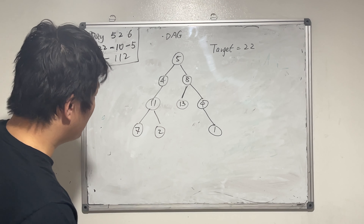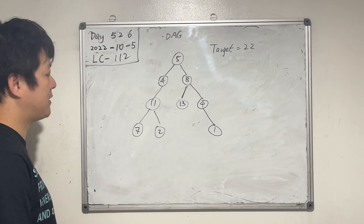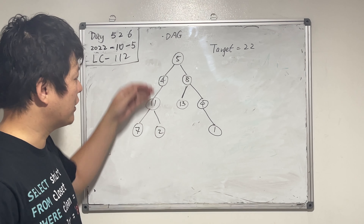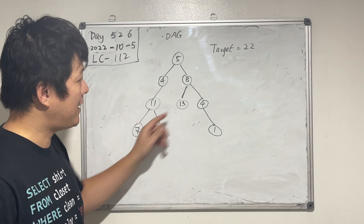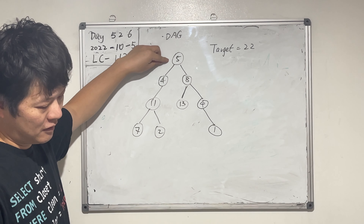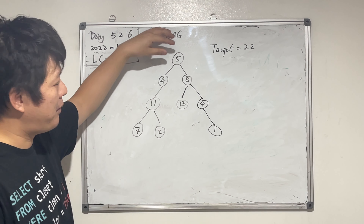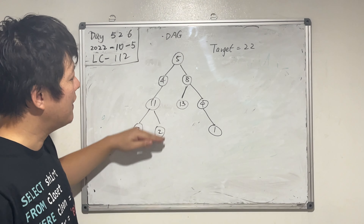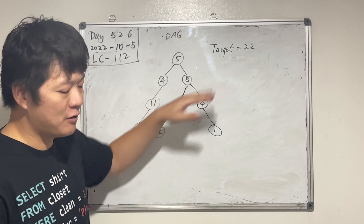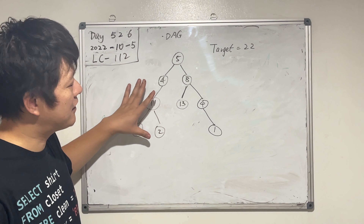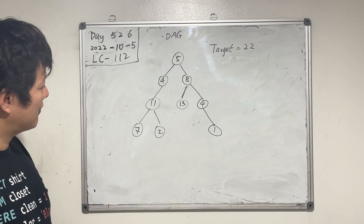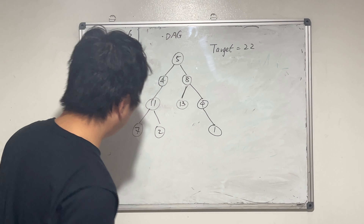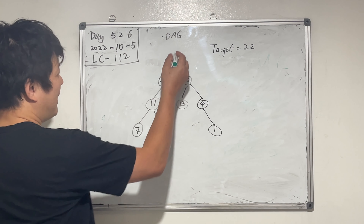Given this binary tree with positive numbers, we want to find out if there's a path from the root to a leaf that equals the target 22. Can you find the path from root to the leaf node where the sum of all nodes equals 22? In this particular binary tree: five, four, eleven, two.